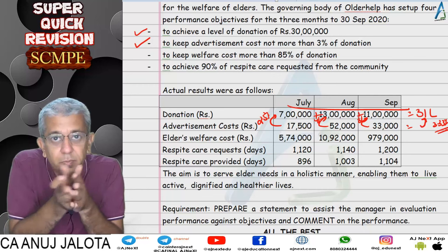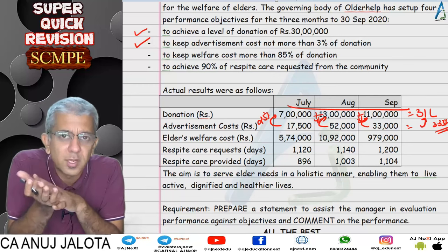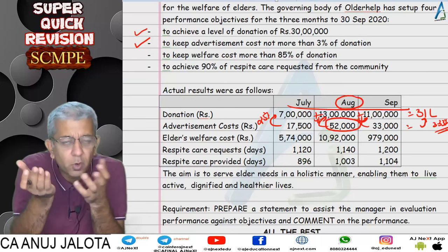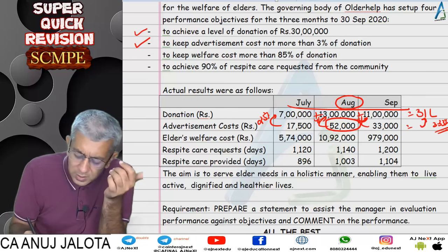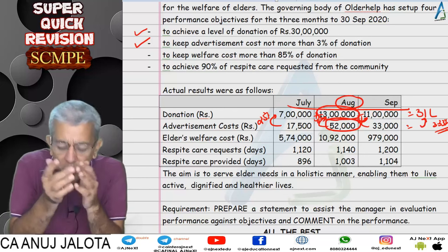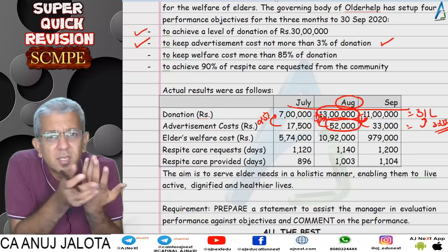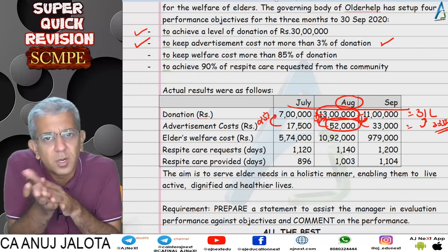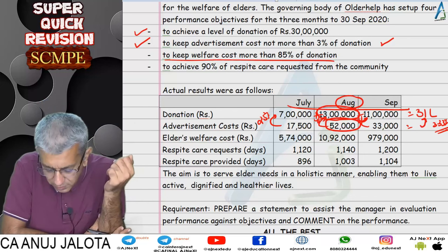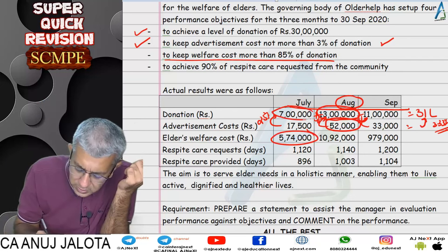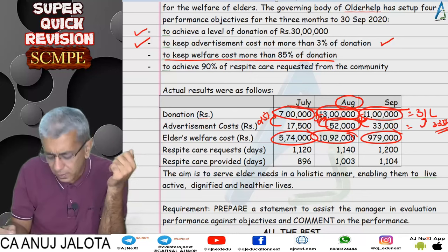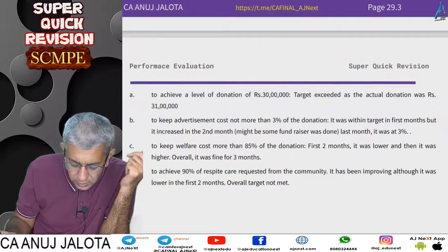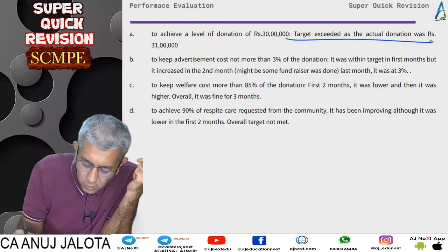The second objective is to keep advertisement cost at not more than 3% of donations. Computing this: July was 2.5%, August was 4%, September was 3%. Overall it comes to approximately 3.33%, which is slightly above the 3% target. In the first month it was within target; in August it exceeded due to a fundraiser program, though that event also contributed to higher donations. Overall this is a minor concern — not severe, but in future, advertisement costs should be controlled.